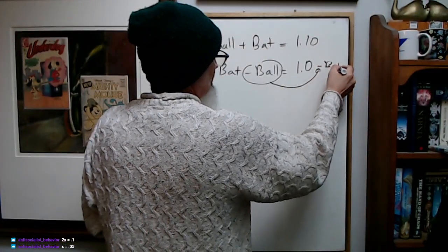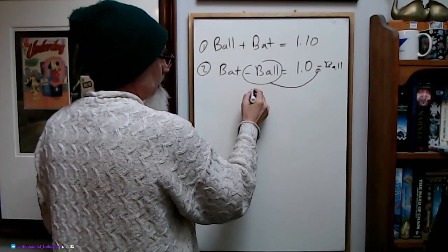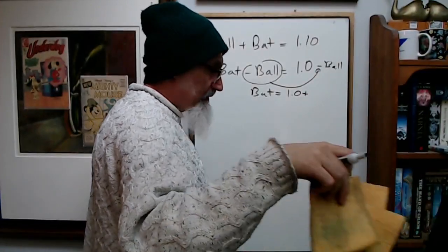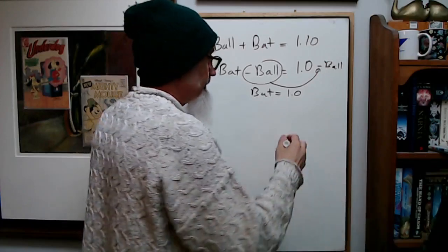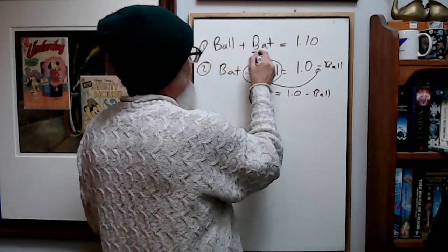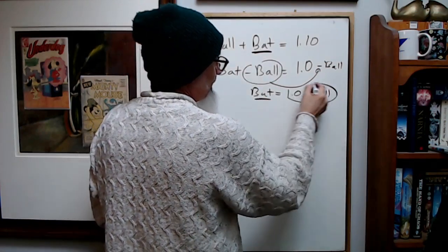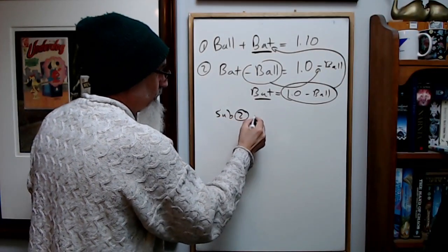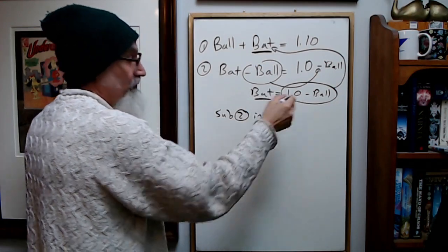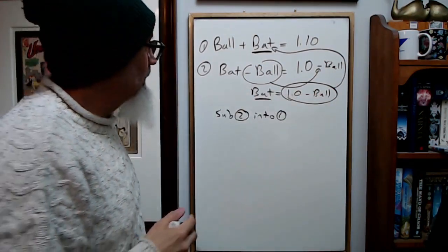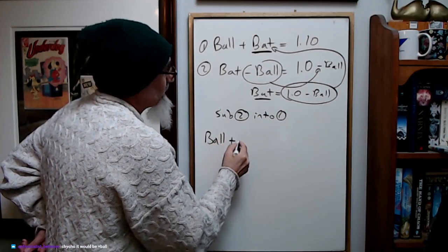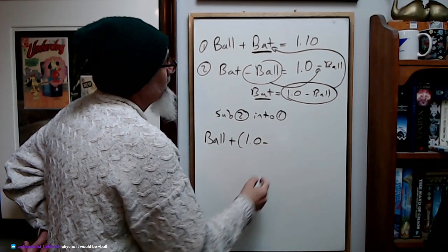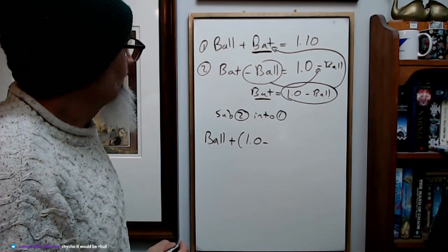You can bring this over, so bat equals 1.0 plus ball. That's the same bat as this, right? So you can take this and substitute it in for the bat. Sub equation 2 into 1, because this is our modified equation 2. Now you got ball plus 1.0 minus one... I'm doing something wrong here.